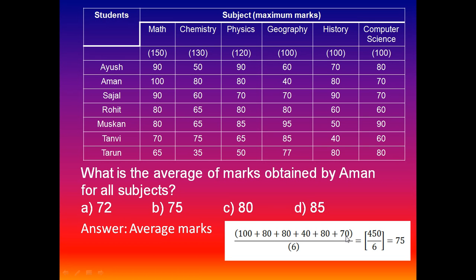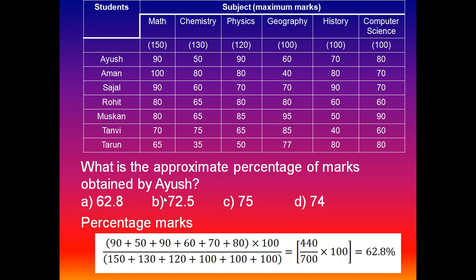Since we calculate the average marks, we divide by 6. That is 450 by 6, equal to 75. This is our required answer, so the option is 75.